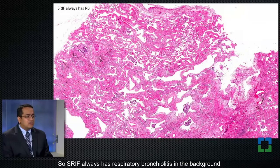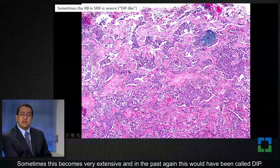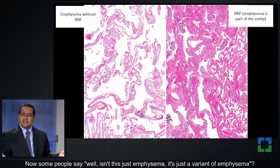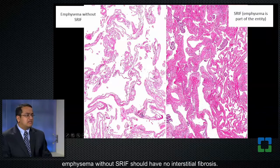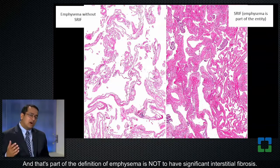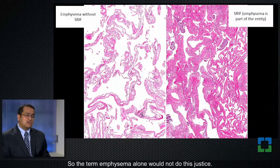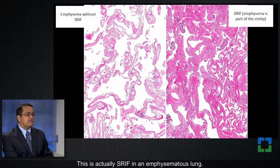The background always has respiratory bronchiolitis, and it can be pretty significant. SRIF always has respiratory bronchiolitis in the background — you can see small collections of macrophages, which would be pigmented at high magnification. Sometimes this becomes very extensive, and in the past this would have been called DIP, but this is part of the picture of SRIF in some cases. Now, some people say isn't this just emphysema? It is not, because emphysema without SRIF should have no interstitial fibrosis — that's part of the definition of emphysema. But the emphysematous lung in SRIF is actually very significantly fibrotic, so the term emphysema alone would not do this justice. This is actually SRIF in an emphysematous lung.